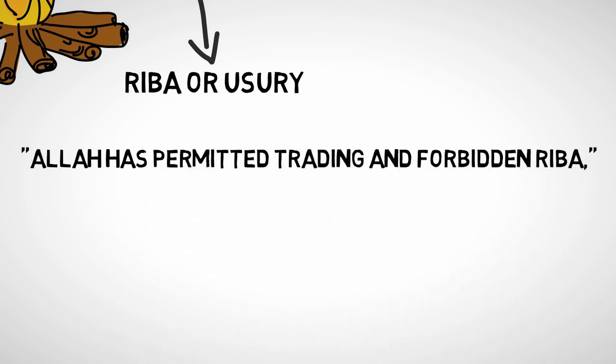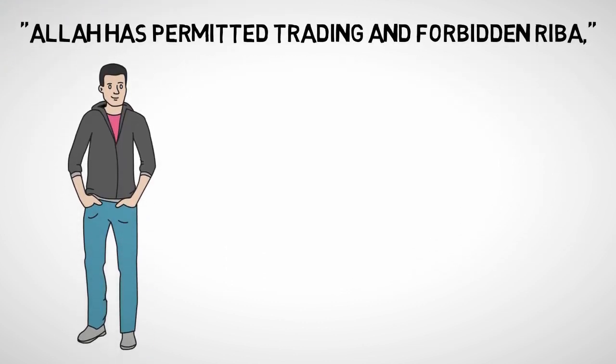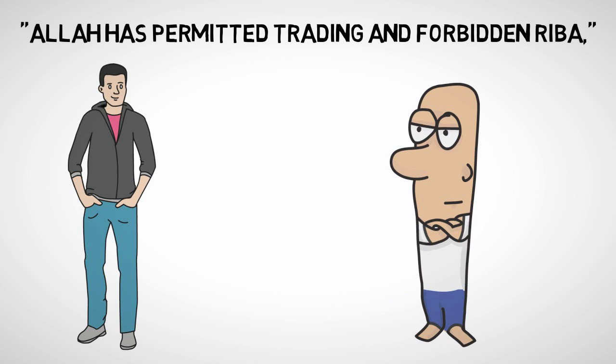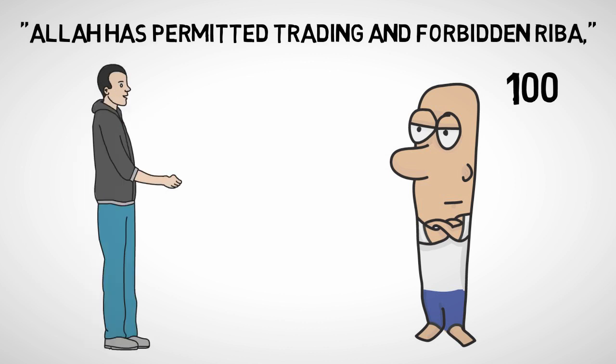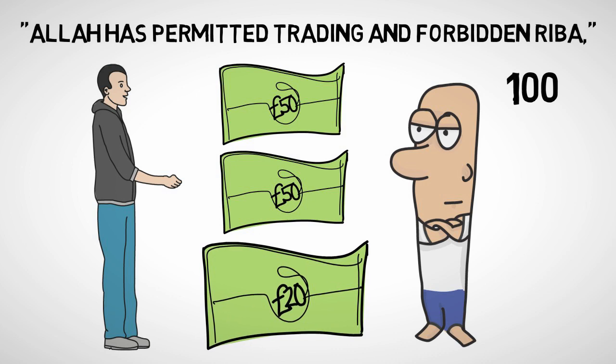So what does riba mean? Riba can be done in many ways. For example, let's say this is Ahmad and this is Mustafa. Mustafa needs 100 bucks to buy a new phone, so I'll tell him, okay listen, I'll give you 100 now and once you save some money, you'll have to pay me 120.